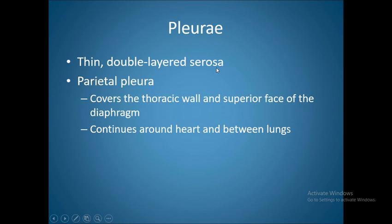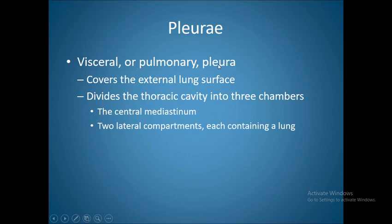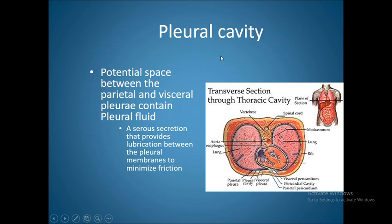The pleura is a double-layer serosa. The parietal pleura covers the thoracic wall and the superior surface of the diaphragm, continuous around the heart and between the lungs. The visceral or pulmonary pleura covers the external lung surface and is directly attached to the lung. The thoracic cavity is divided into three chambers: the central mediastinum and two lateral compartments, each containing a pleural cavity.